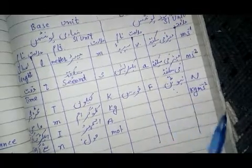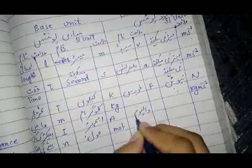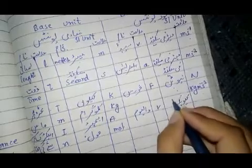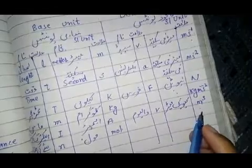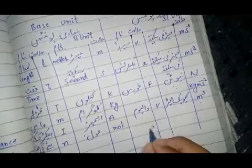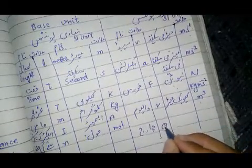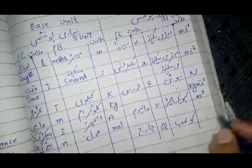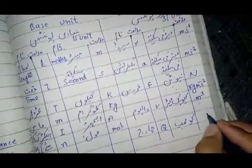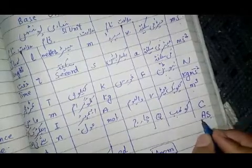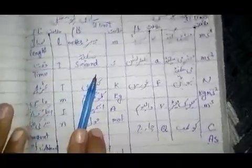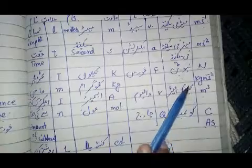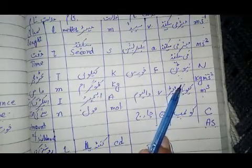For volume, the symbol is 'V' and the unit is cubic meter, or m³. Meter is the base unit here. For electric charge — if there is any charge on an electron or any object — the symbol is 'Q', and the unit is the coulomb, represented by 'C', which equals ampere times second (A·s). Ampere is a base unit and second is also a base unit, so coulomb is also a derived unit formed from base units.